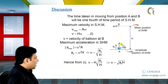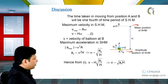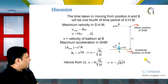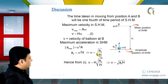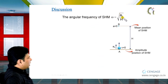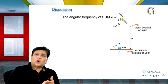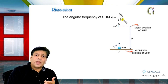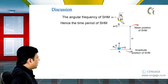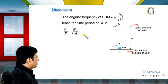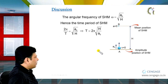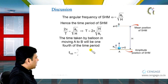For the time calculation: moving from the amplitude position to the mean position in SHM takes one-fourth of the time period. We have angular frequency ω = √(A₀/H), and since ω = 2π/T, we get 2π/T = √(A₀/H), which gives T = 2π√(H/A₀). Therefore, the time taken by the balloon to move from ground level to height H is T/4 = (π/2)√(H/A₀).